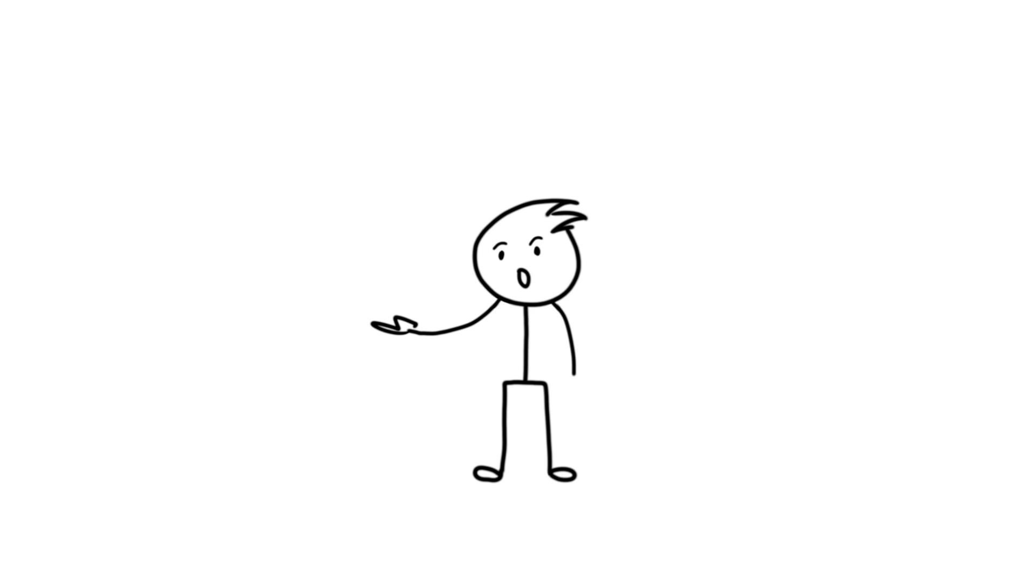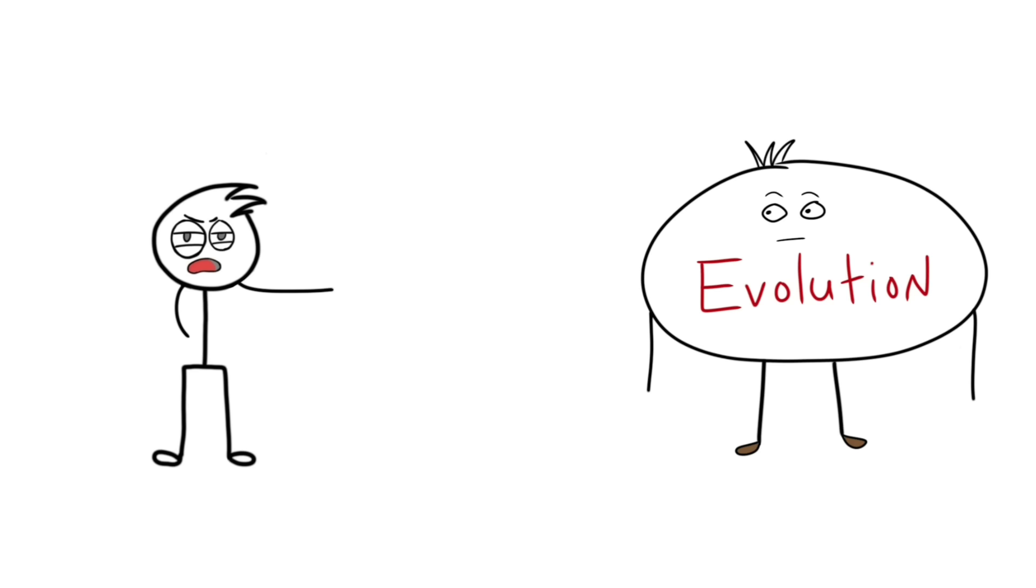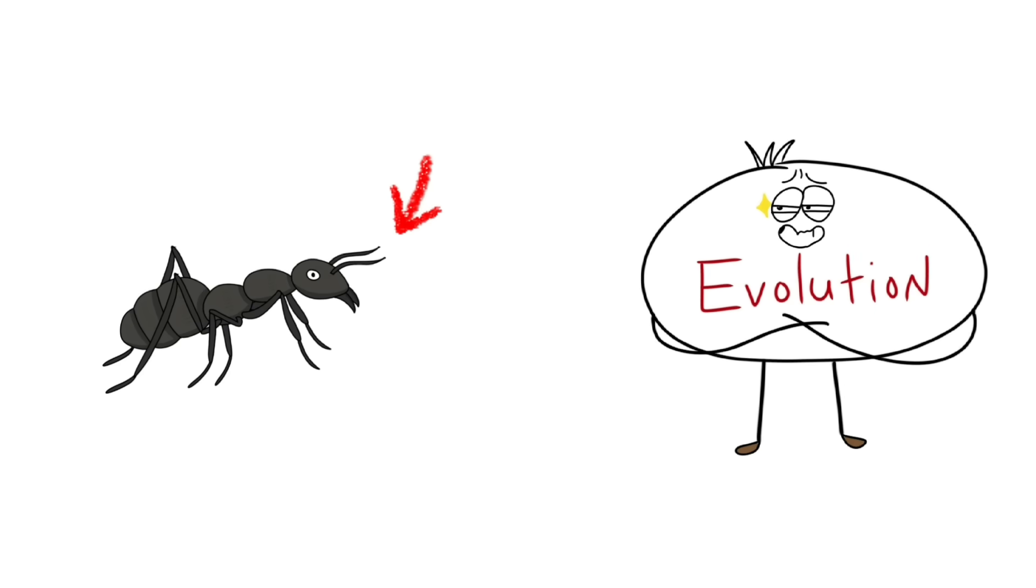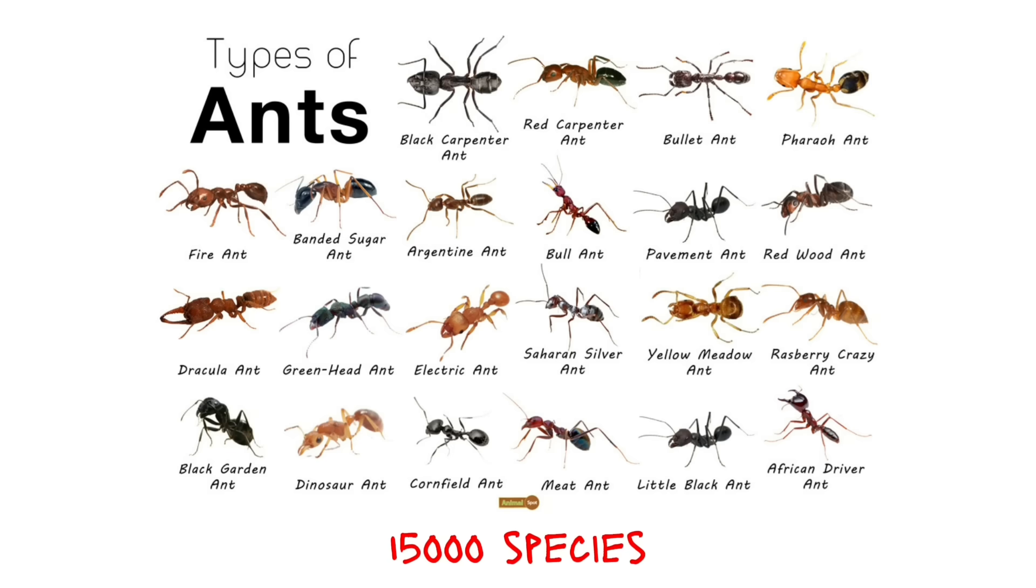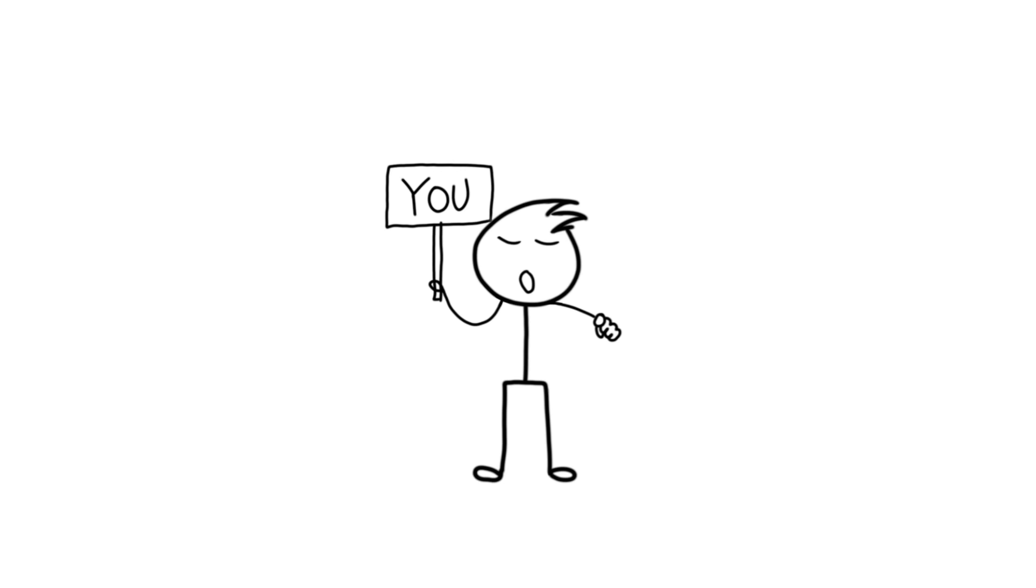And what's the proof that ants would be the smartest? Well, we'll talk about that in a separate video. For now, let's see how evolution went haywire for these tiny insects. There are over 15,000 known ant species. So you can guess how evolution treats them.